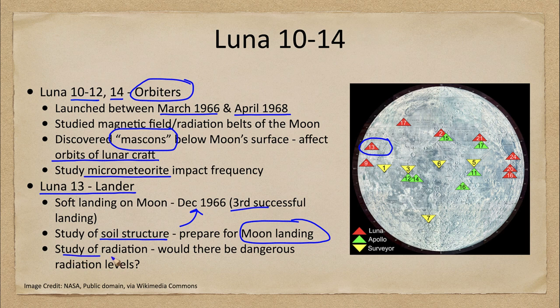Also studied were the radiation levels on the surface. Would there be dangerous radiation levels? That's something we have to think about when sending humans to the moon. For robotic craft it doesn't matter as much, as long as the radiation is not so intense that it would fry electronics. But for humans going to the moon, we want to make sure that the radiation levels were not too high.